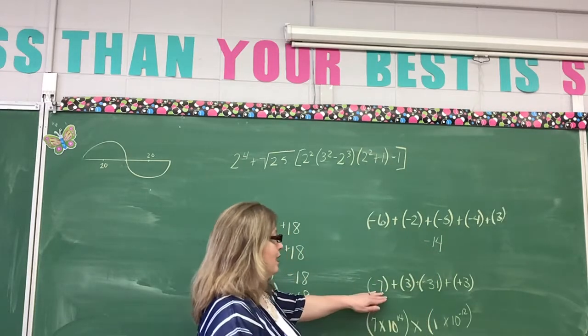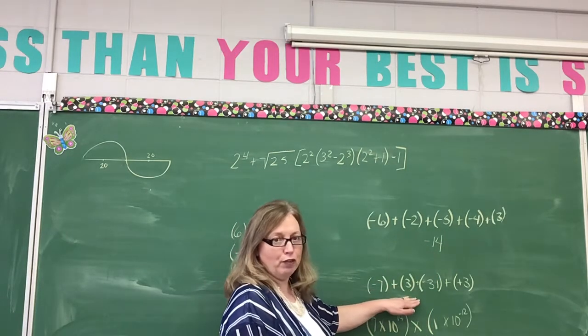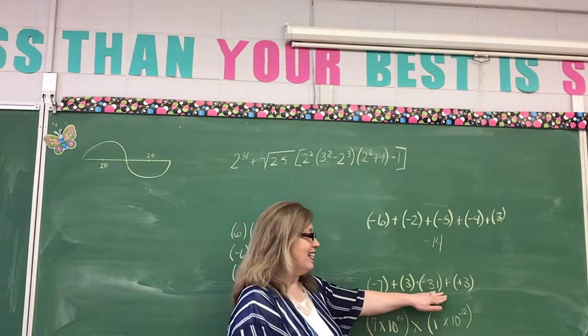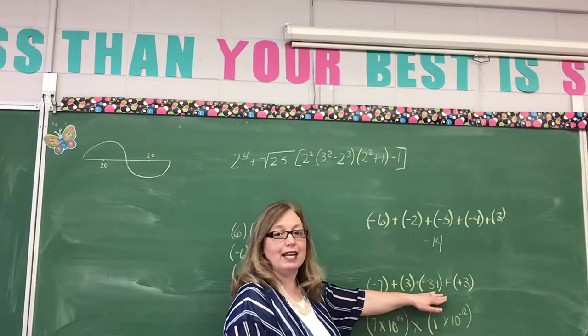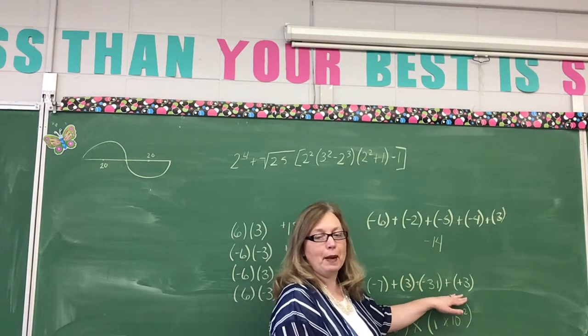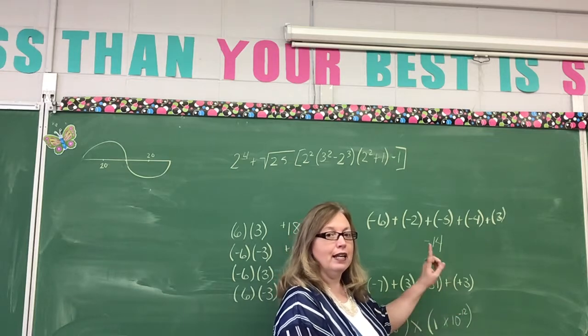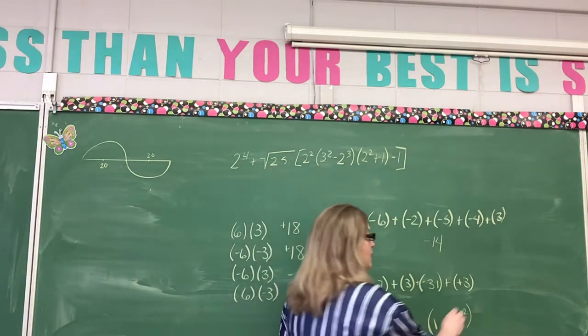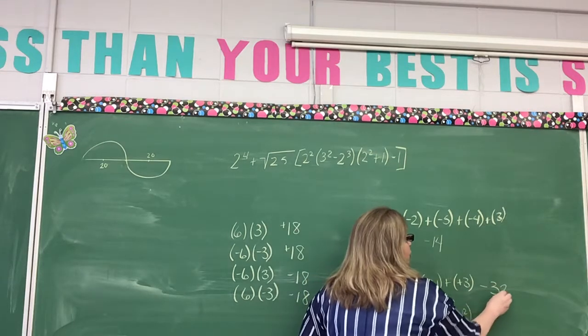Look at this next one. Negative seven plus positive three is negative four. Negative four plus a negative 31 gives us a negative 35. Negative 35 plus a positive three gives us a negative 32.